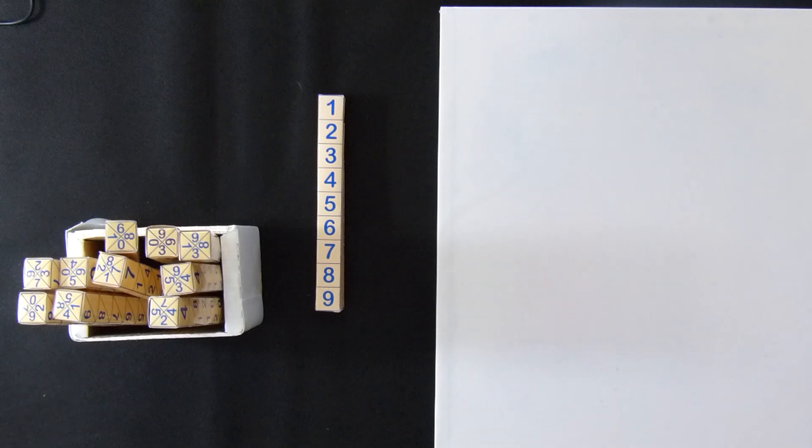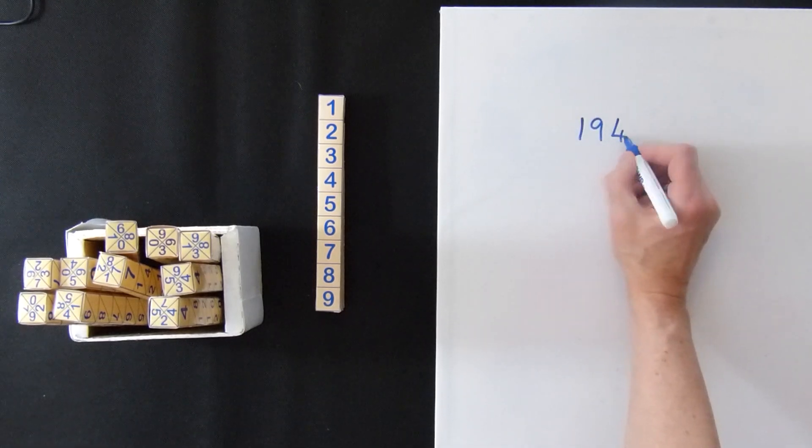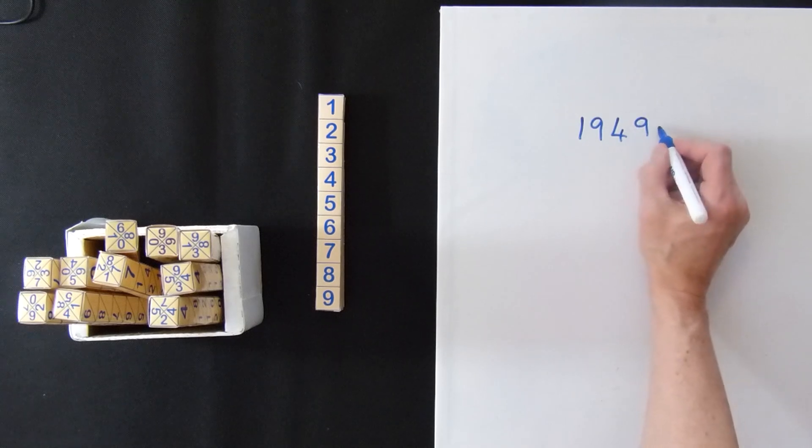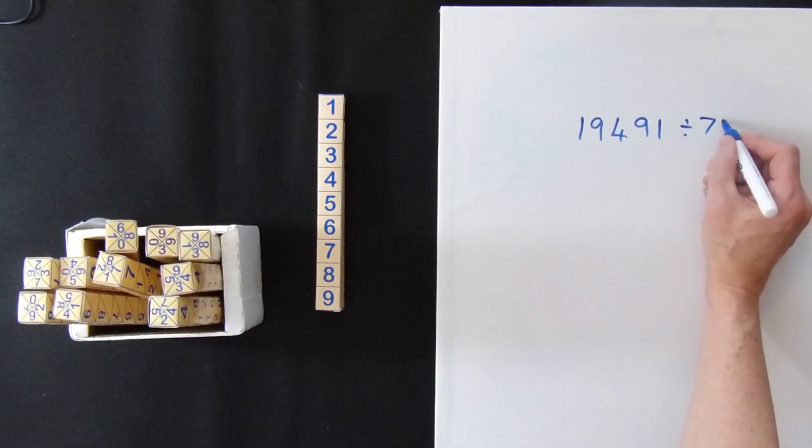The sum we're going to do is we're going to divide 19491 and we're going to divide that by 73.